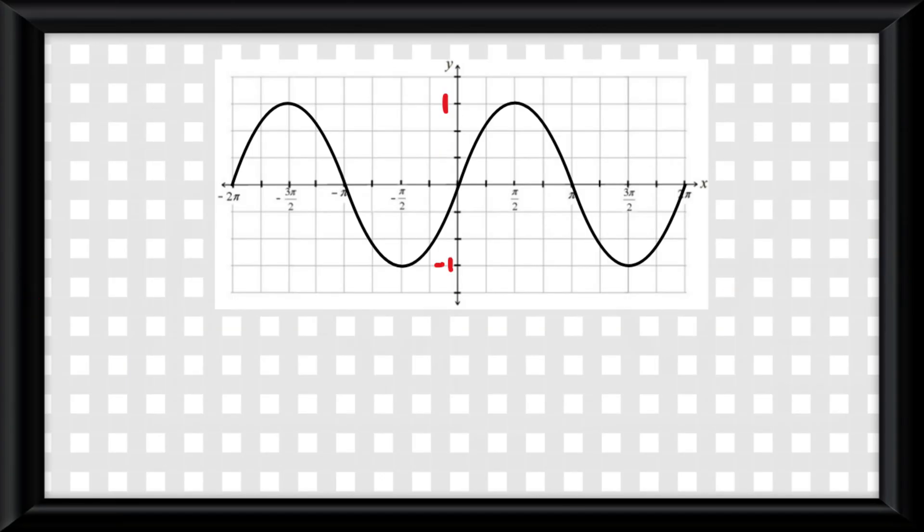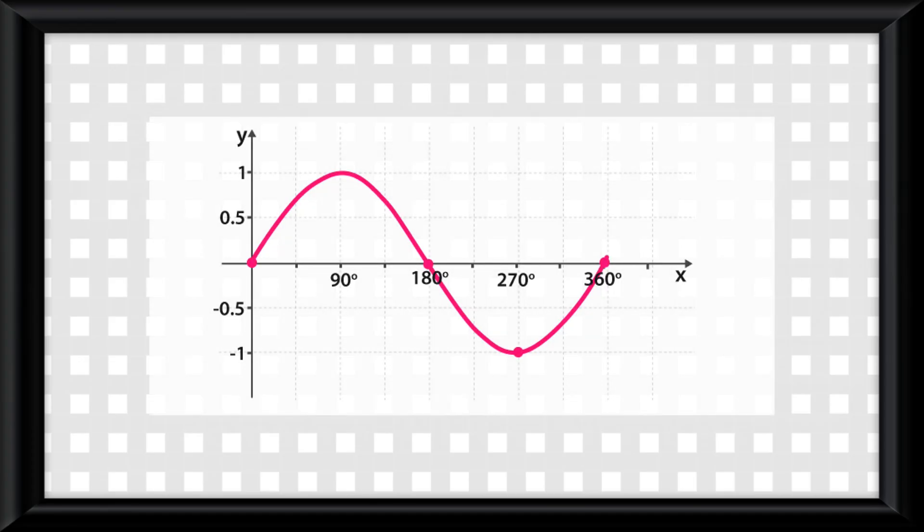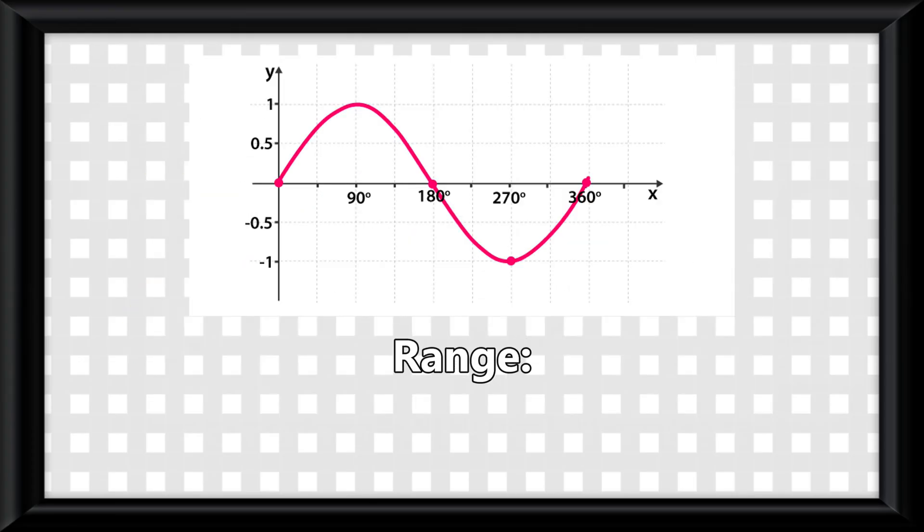And since it does go to positive and negative infinity, it makes all sine functions have a domain of all real numbers. Now if there are no transformations on a sine graph, it will typically go on the y-axis from 1 to negative 1. This means the range of any sine graph would be whatever the minimum to maximum is put into brackets.